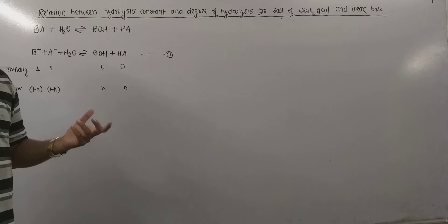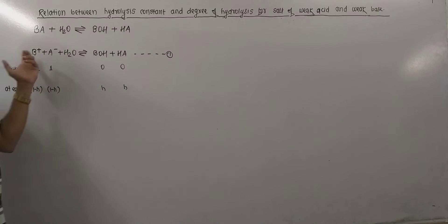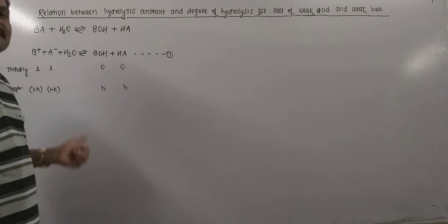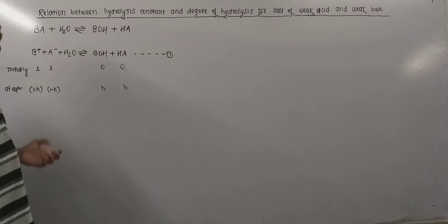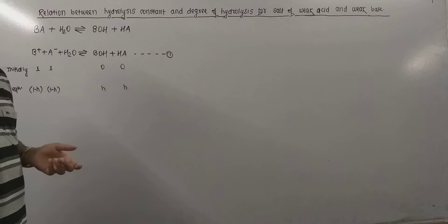And the number of moles which remained unhydrolyzed of B+ and A- will be equal to (1-H) and (1-H) respectively in case of both of these ions of the salt.